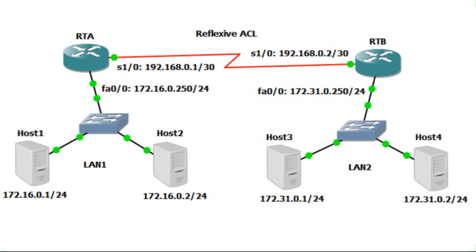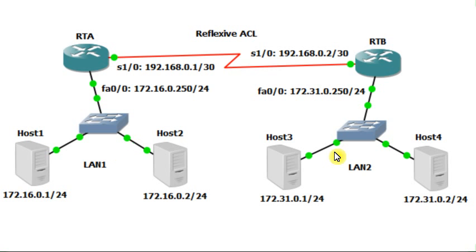In this example we're going to see how to configure a reflexive access list. A reflexive access list is based on named access lists, so we cannot use numbered access lists to do that. We would like to allow traffic from LAN 1 to go to LAN 2 but not in the opposite direction — we don't want any host from LAN 2 to reach hosts in LAN 1.